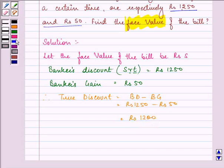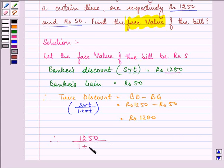We also know that the formula for true discount is SRT upon 1 plus RT. So we have, in place of SRT, we can substitute this value. So, 1250 upon 1 plus RT is equal to Rs. 1200.